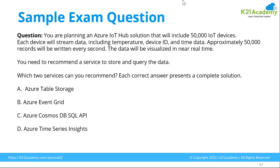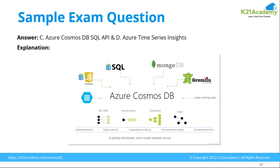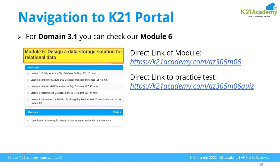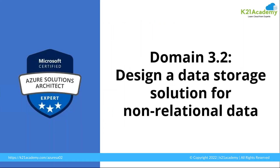With Cosmos DB, you can use any choice of API. To track those events — which particular event is generated at what duration of time — you need Azure Time Series Insights. And for any API choice to handle the high request volume, Cosmos DB is the service you use. You can go to Module 6 in the K21 Academy portal and attempt some of the questions there as well.